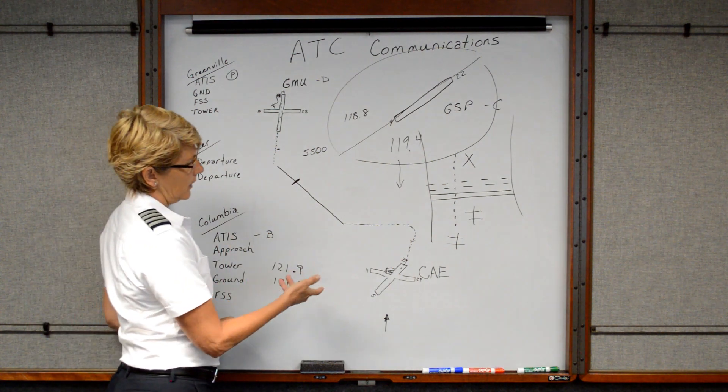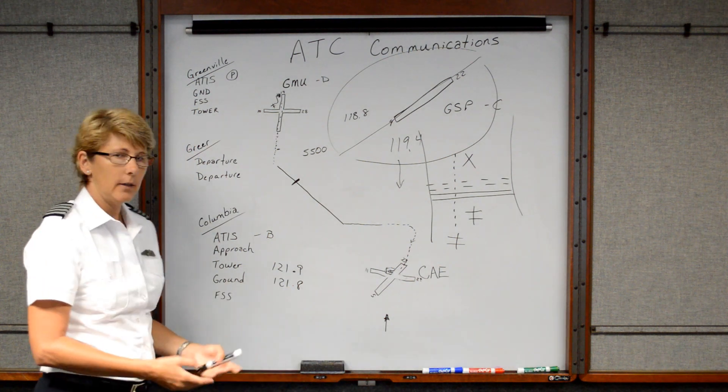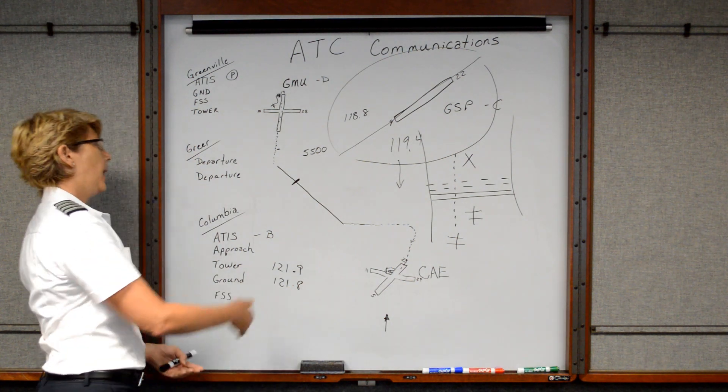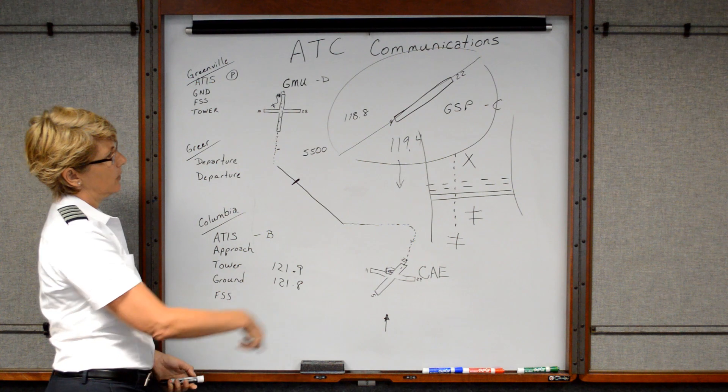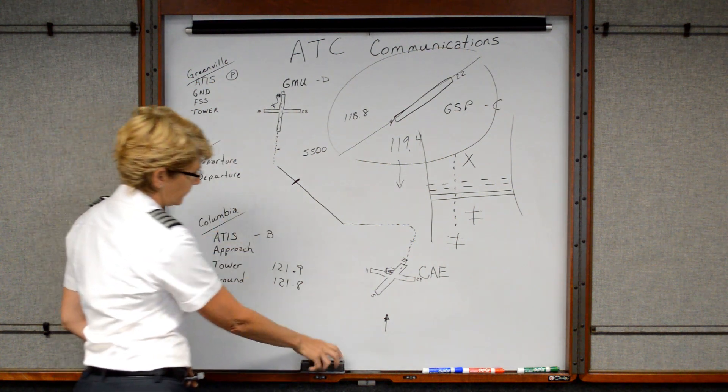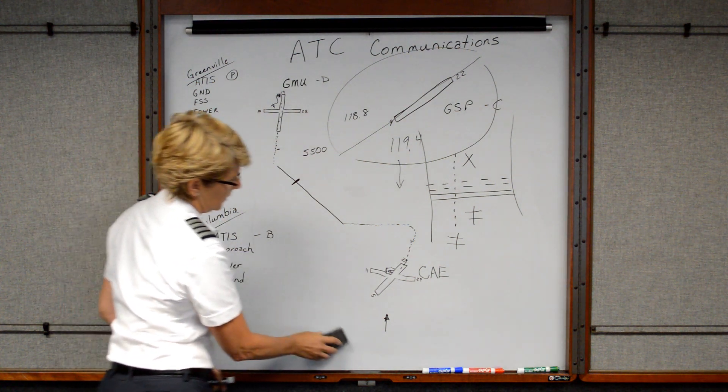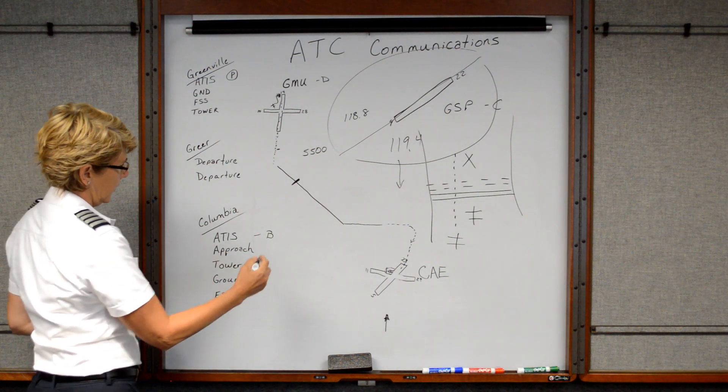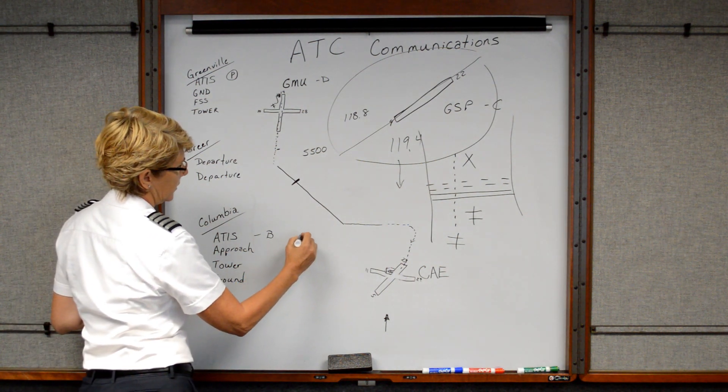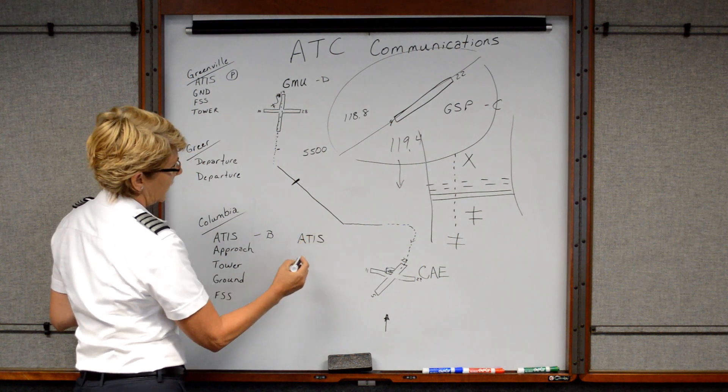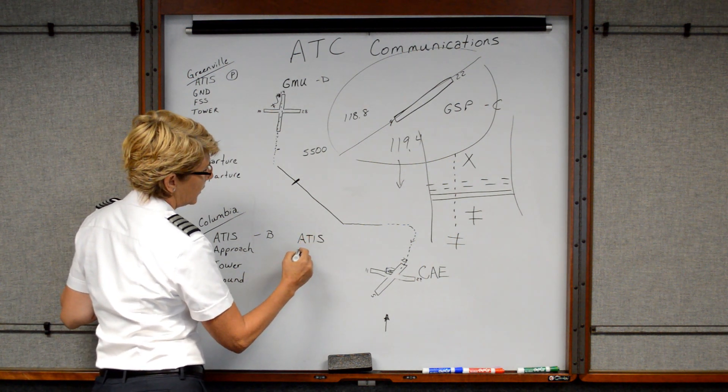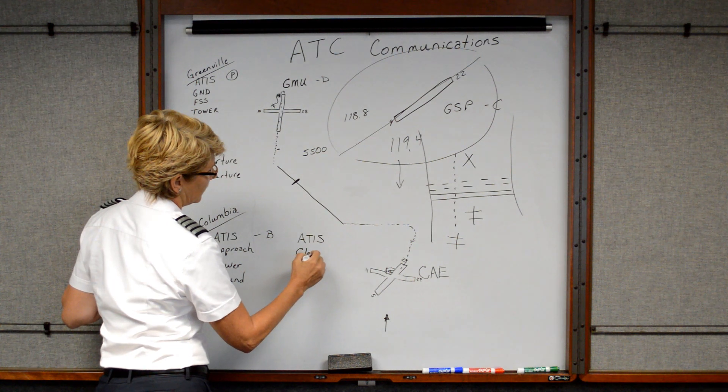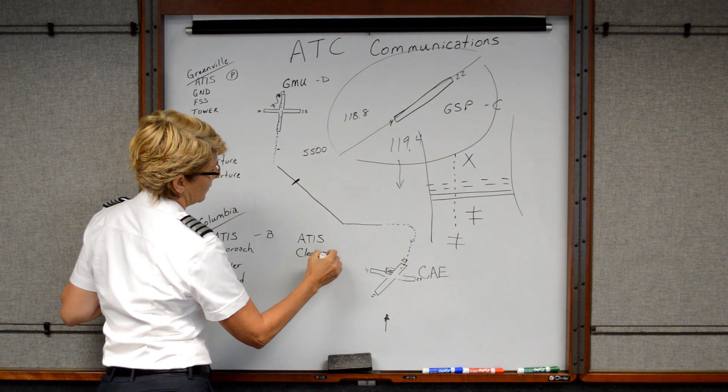Okay, let's say that we landed, we went in, maybe use the facilities, got a little drink of water, and then we want to fly back. So how are the communications going to work in reverse? So to depart out of Columbia area, then the first thing we have to do is listen to the ATIS again.